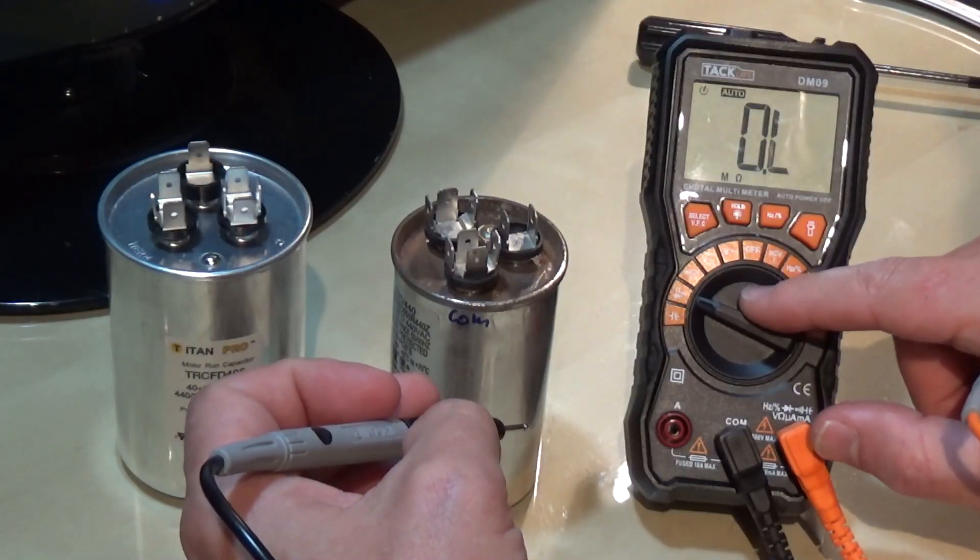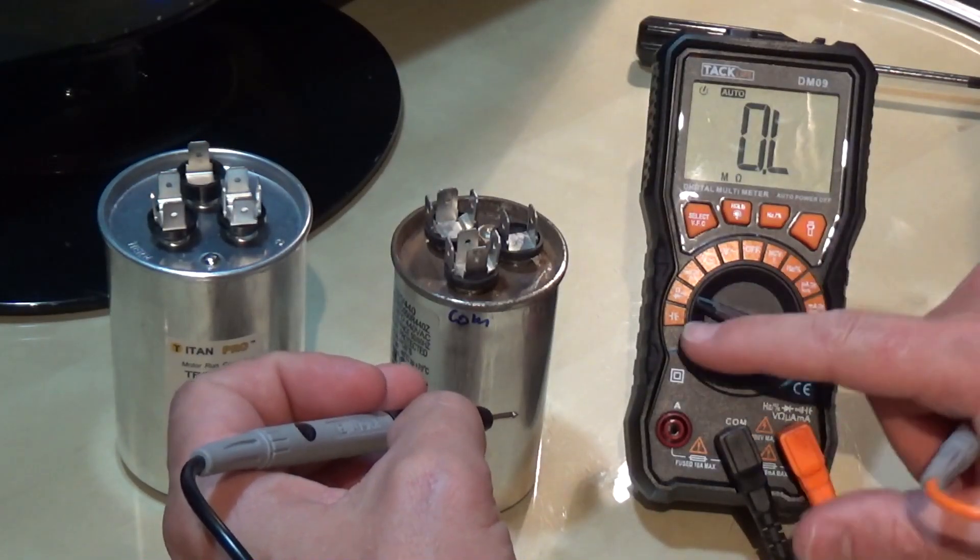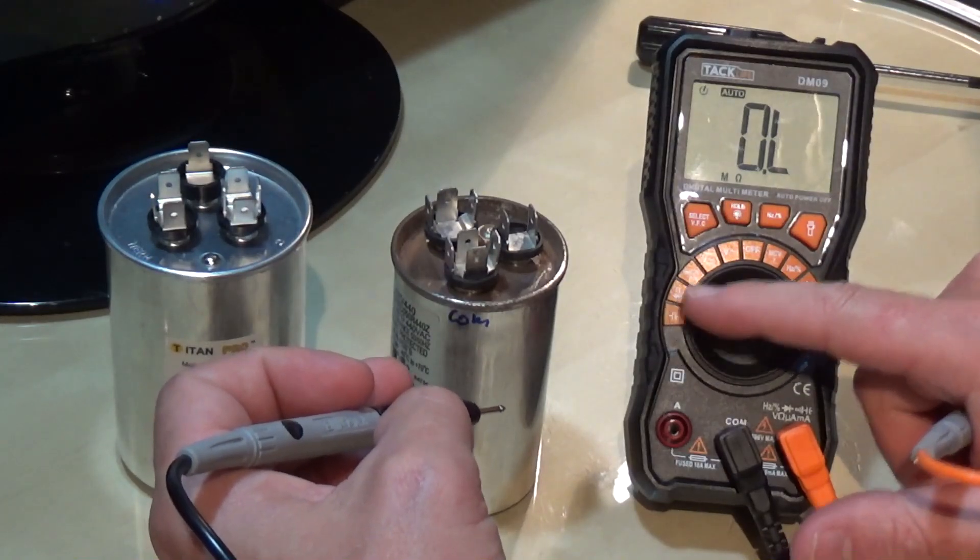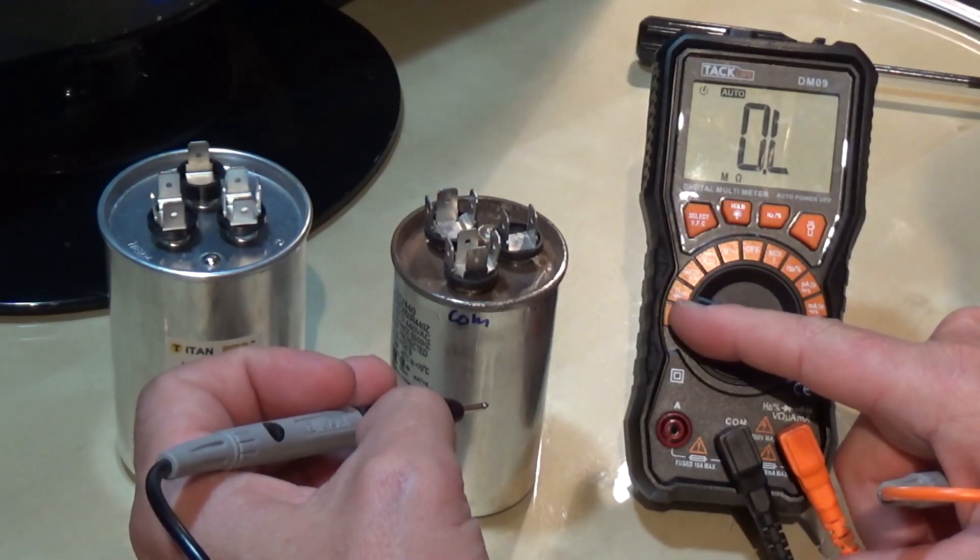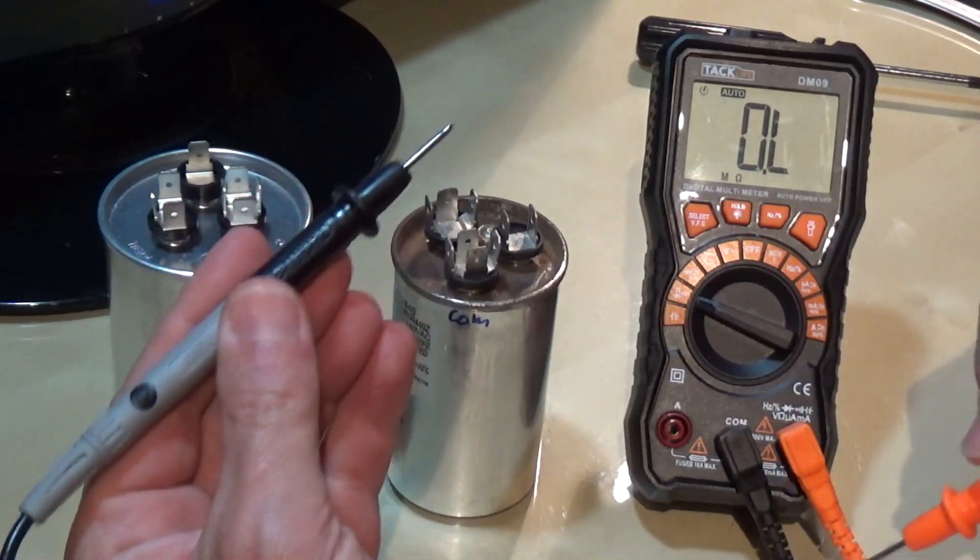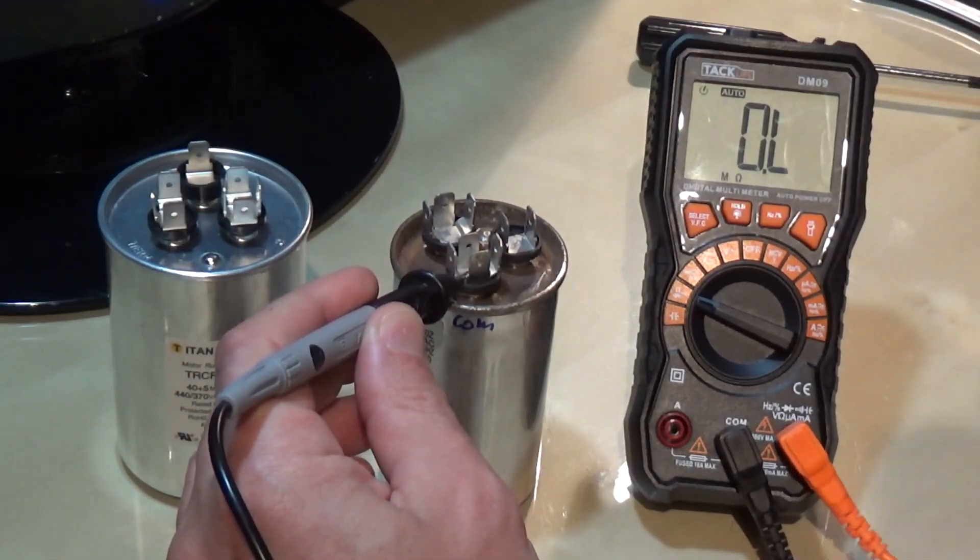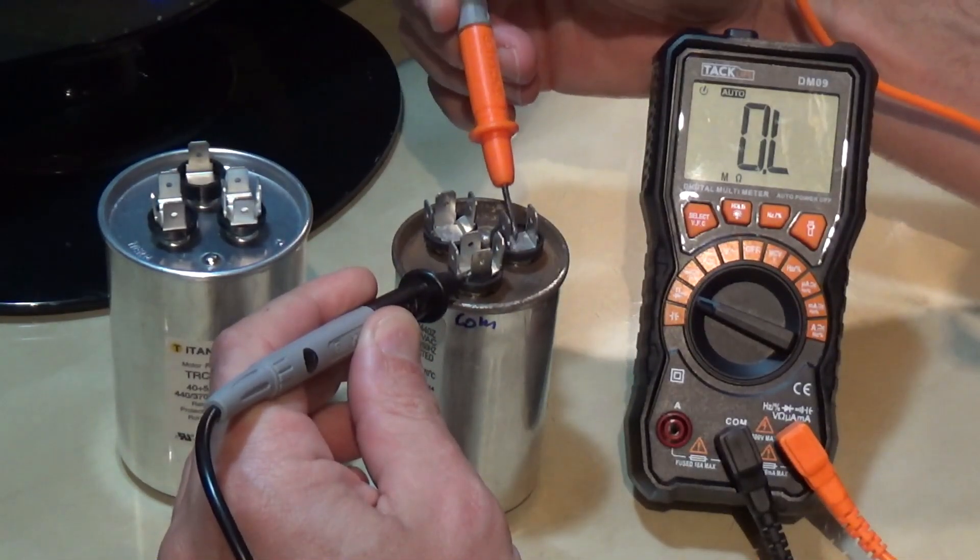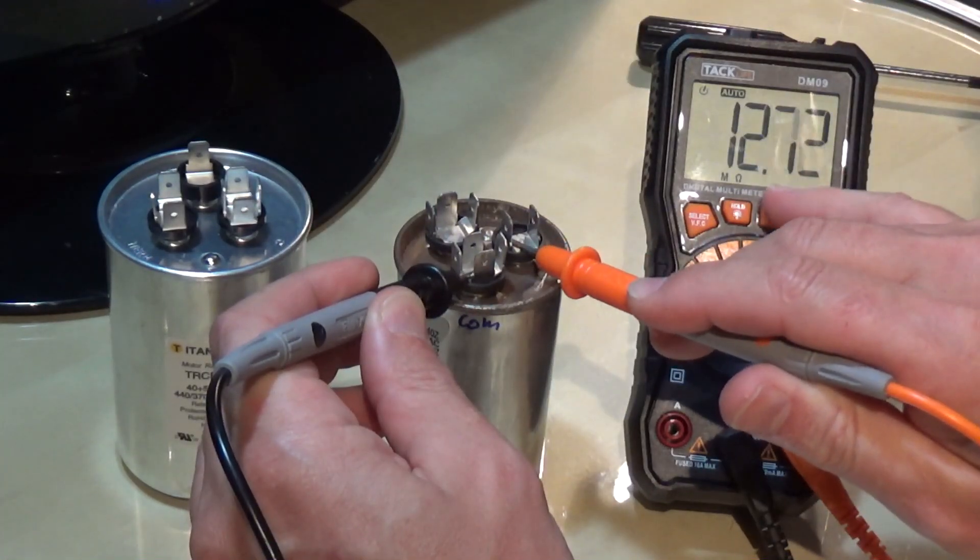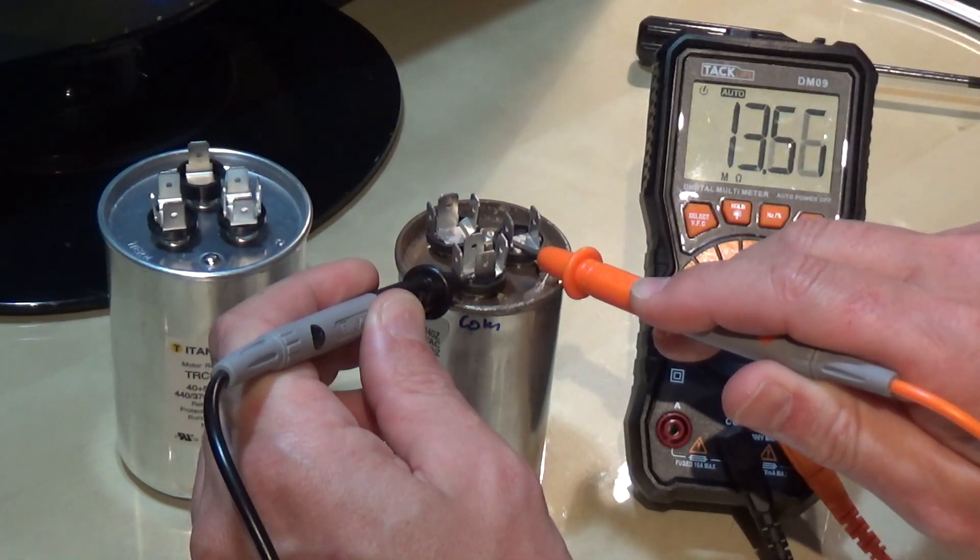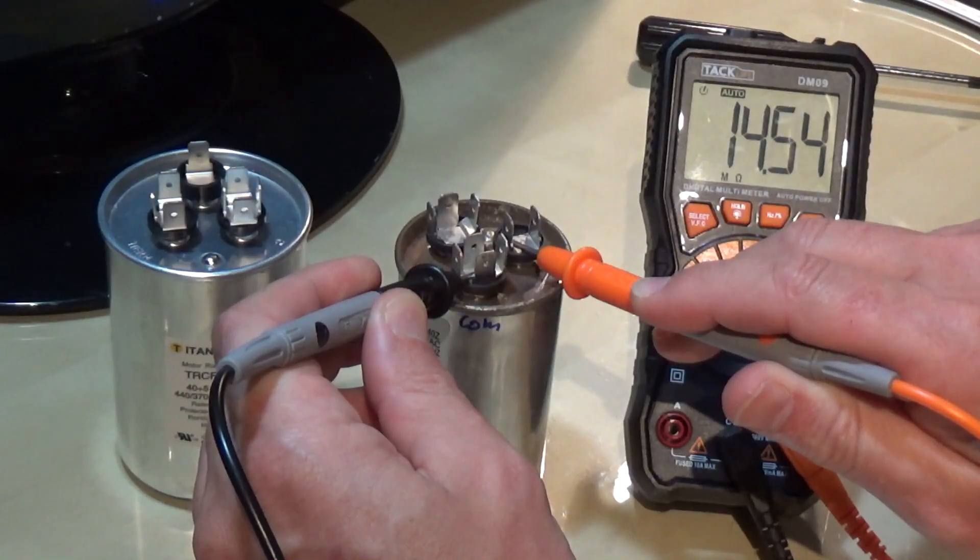To check your capacitor with a multimeter that doesn't check capacitance, you change it to ohms. You put the black lead onto common and the other one on the terminal you want to check. If you see numbers going up, that means it's good. If nothing is going on, that means it's bad. So this side is good. I'm going to check this side, and it's going up—that means it's good.